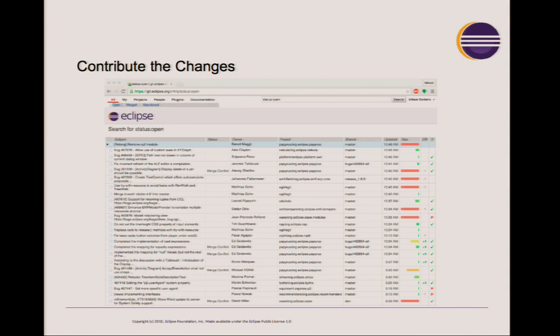Does anyone here use Gerrit? A few hands. The rest of you — I suppose you use GitHub? If you're not using Gerrit, I'm just curious how you do your code review. We provide a Gerrit instance, but obviously with the Social Coding Initiative, you can host your project on GitHub and use pull requests instead of Gerrit for your contributions.